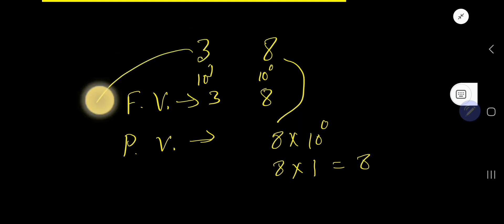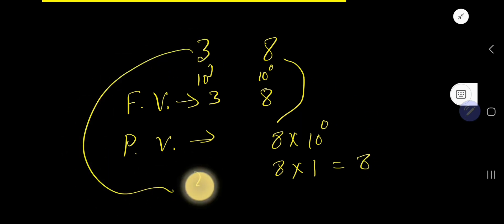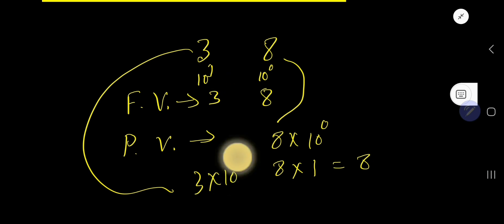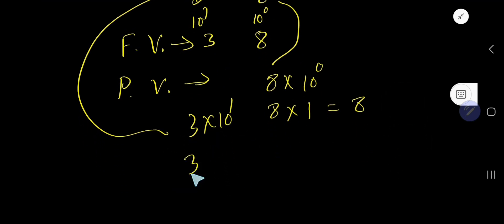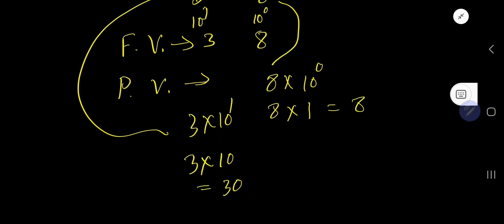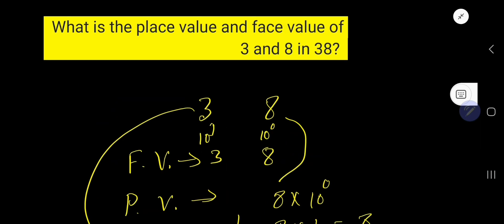What is the place value of 3? It is 3 times the position of this 3, which is 10 to the power 1. 10 to the power 1 means after 1, you will have just one 0, that is 10. So 3 times 10 equals 30. The place value of 3 is 30.